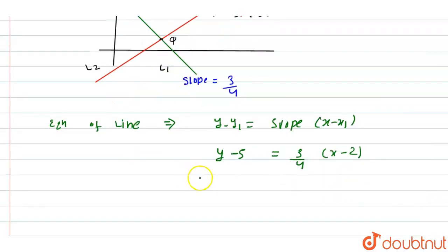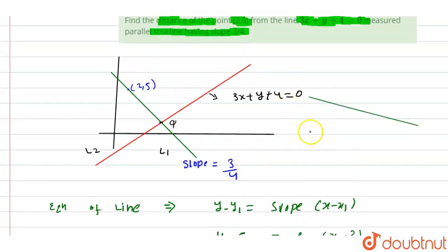If we solve this, we have 4y - 20 = 3x - 6, which gives us 4y - 3x = 14. Let this be equation 2, and the previous line equation is equation 1.